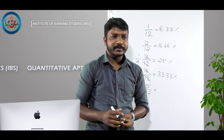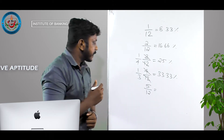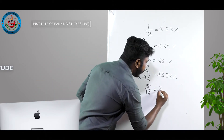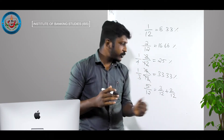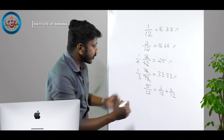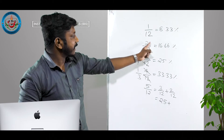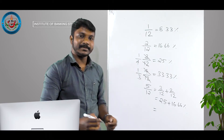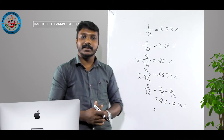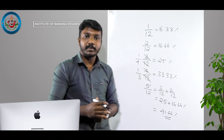5/12 is a little difficult. We can write 5/12 as 3/12 + 2/12. 3/12 is 25% and 2/12 is 16.66%, so 5/12 = 25 + 16.66 = 41.66%. So we have identified 5/12 as 41.66%.